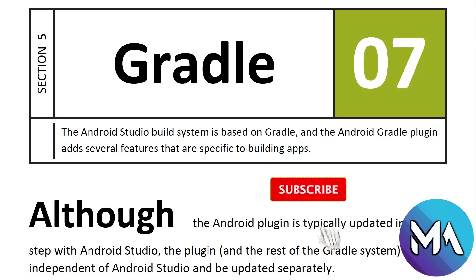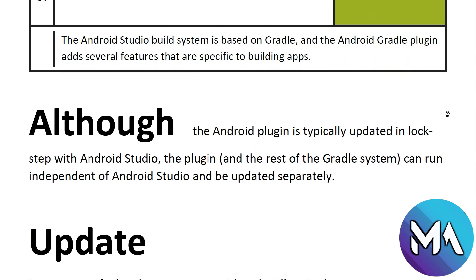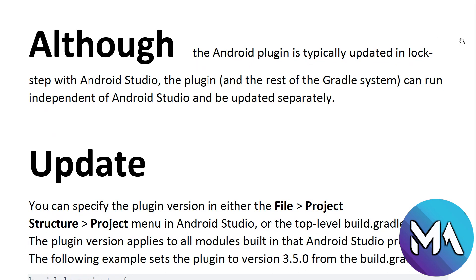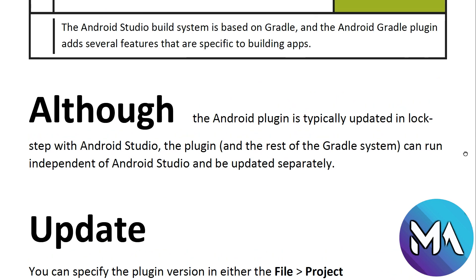In this tutorial we will see how Gradle works in Android and what Gradle is. The Android Studio build system is based on Gradle, and the Android Gradle plugin adds several features specific to building apps. Although the Android plugin is typically updated in lockstep with Android Studio, the plugin and the rest of the Gradle system can run independent of Android Studio and can be updated separately. So Android is based on Gradle — Gradle is like the core of Android.